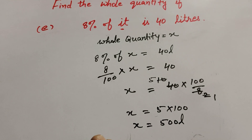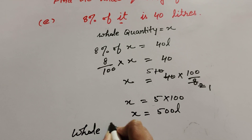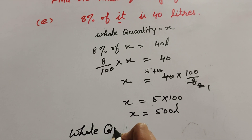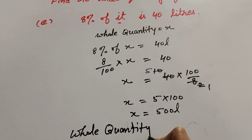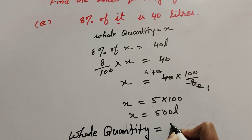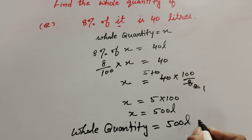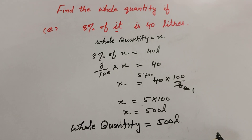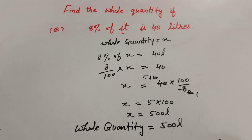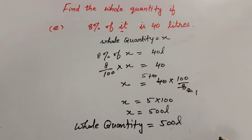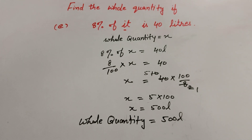So x equals 500 litres. The whole quantity is 500 litres. So 8% of 500 litres is 40 litres. Thanks for watching — like, comment, and share my video, and subscribe to my YouTube channel.